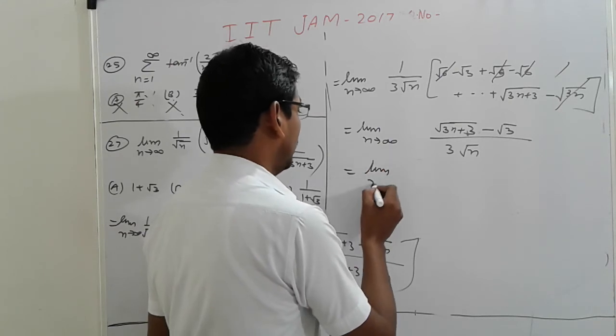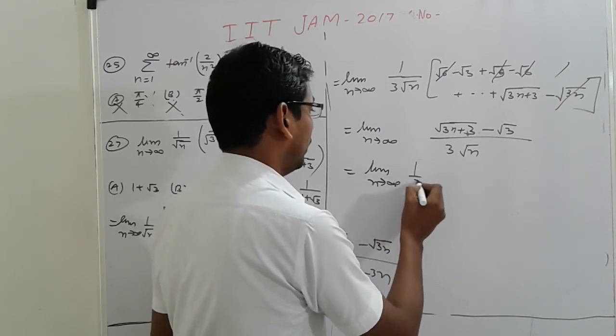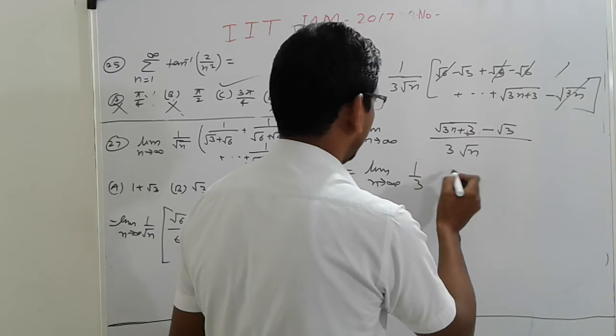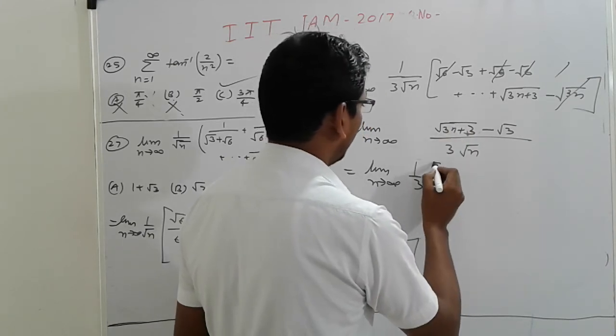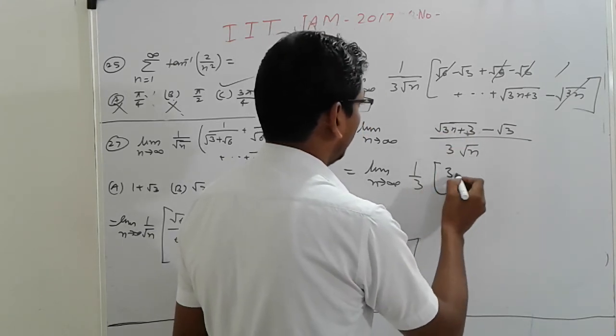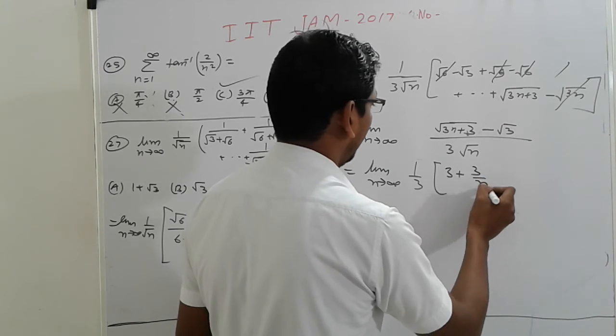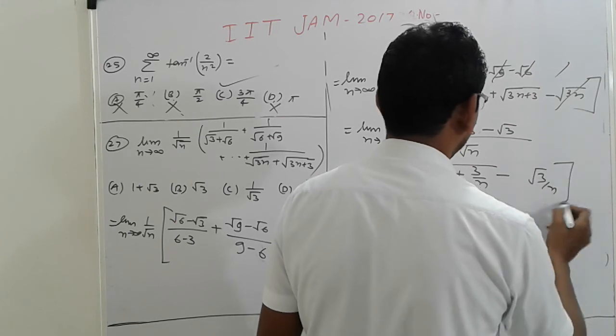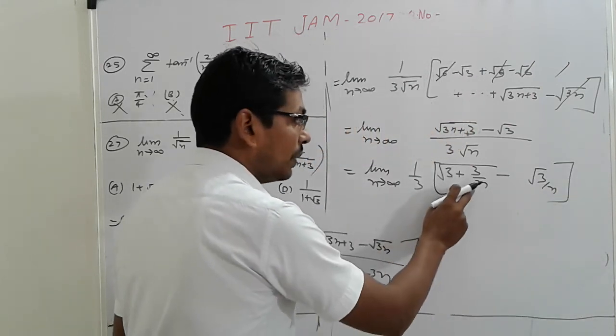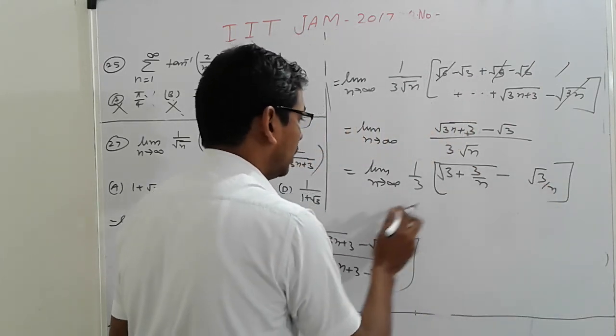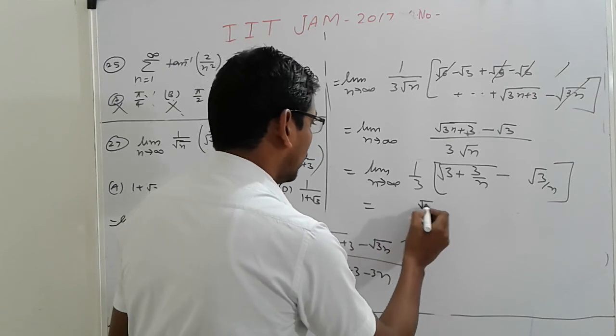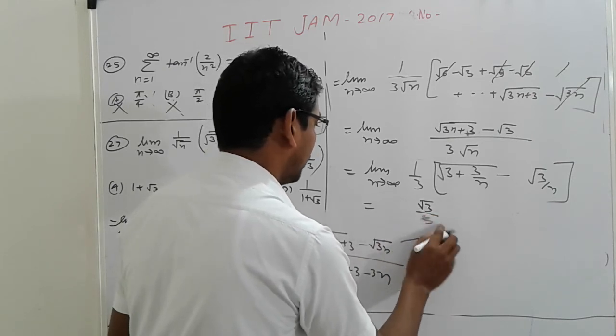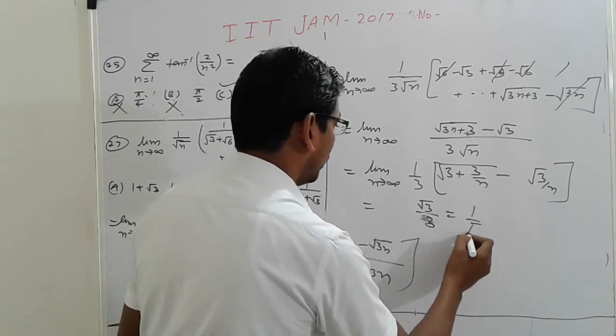Limit n tending to infinity, 1 by 3 root(3n), divide by root n. So we have root(3 plus 3 by n) minus root(3 by n). Apply the limits, which is 0, which is 0. Only 3 remains: root 3 by 3, which is 1 by root 3.